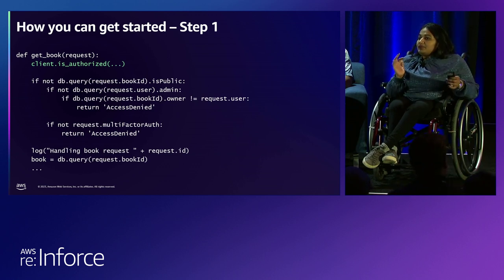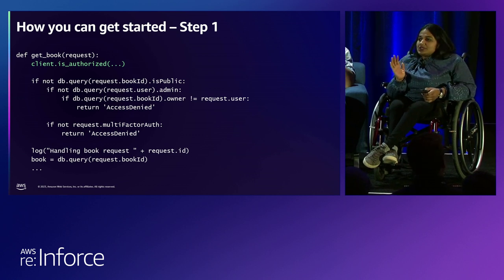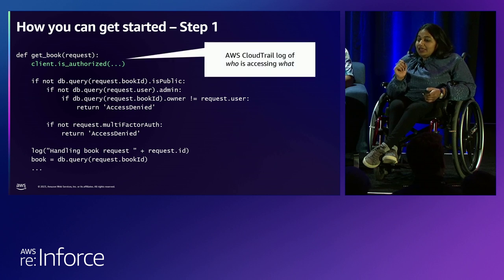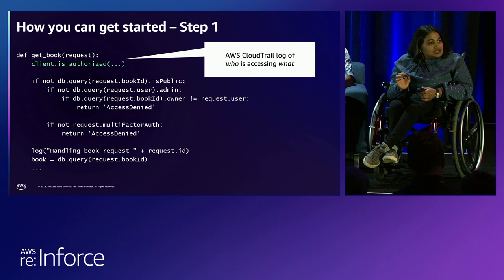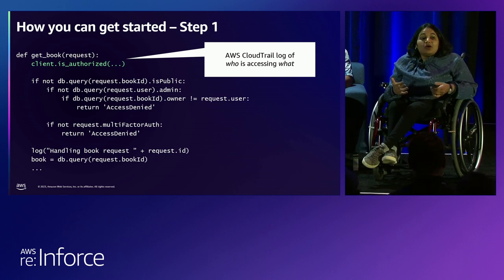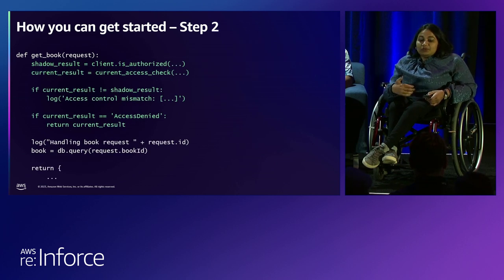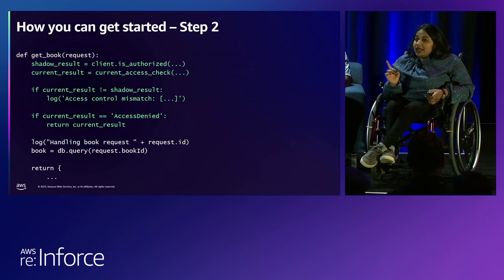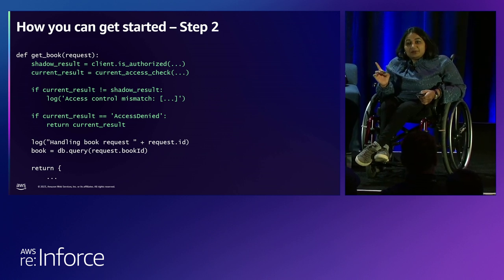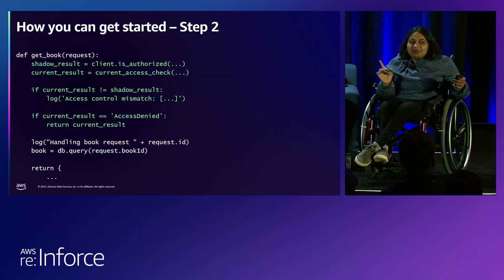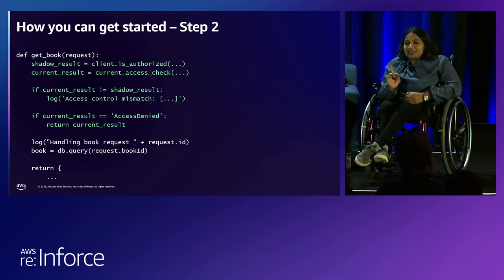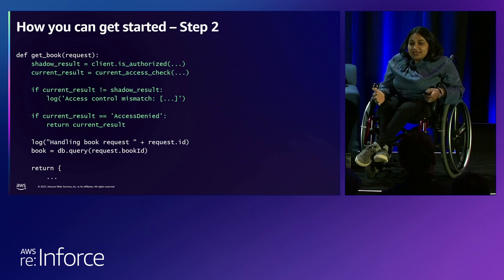The first step: call Verified Permissions and discard the result. That sounds crazy, but hear me out. It will give you a CloudTrail log of all your authorization requests and comprehensive information about who is accessing what. It already leverages your existing CloudTrail infrastructure and auditing. Now you're ready for step two: start writing the policies. Compare the authorization results that Verified Permissions gives you with your existing permissions. Prepare to be surprised about what you discover about your application, your users, and your permissions model.